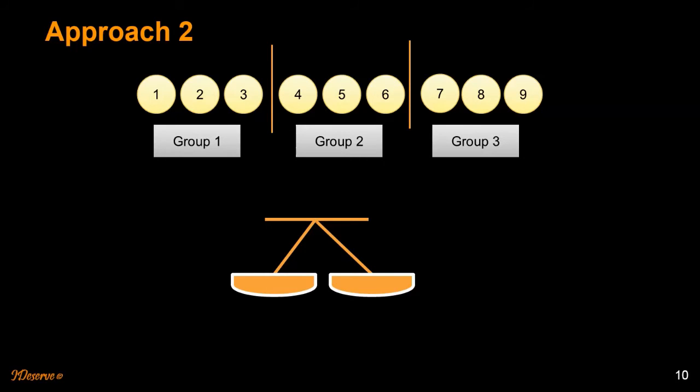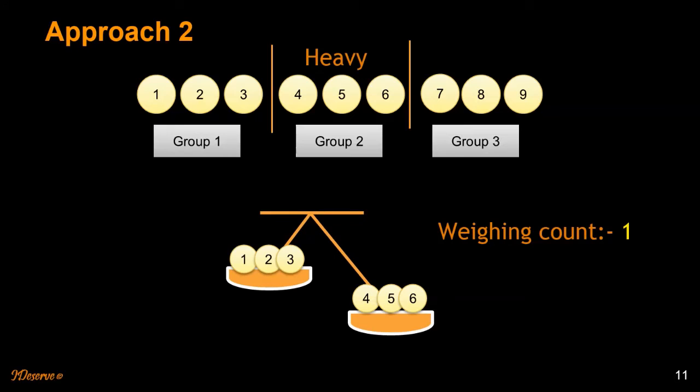Then again I followed the same approach. I weighed group one and group two first. I assume that group two is heavier than group one. In that case the heavier ball should be part of group two. There is only one heavier ball, so we will throw out group one and group three and only keep looking for the ball in group two.